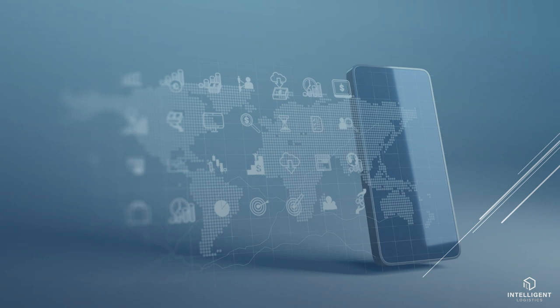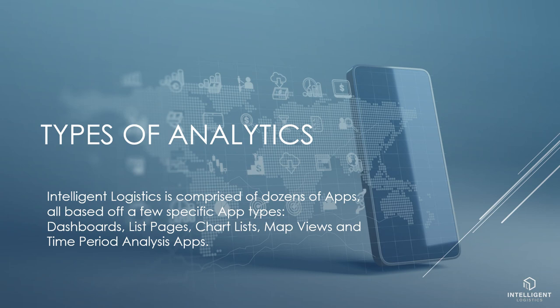Intelligent Logistics is comprised of dozens of apps, all based off a few specific app types: dashboards, list pages, chart lists, map views, and time period analysis apps. Apps in Intelligent Logistics don't require any software — they are in your browser and render in HTML.